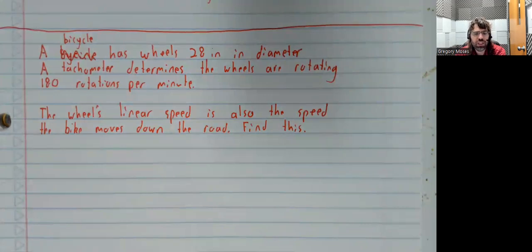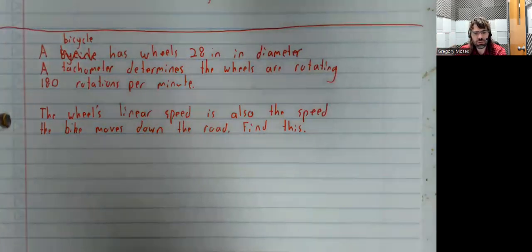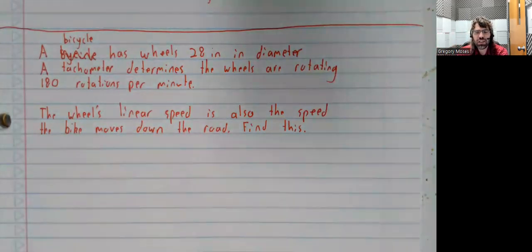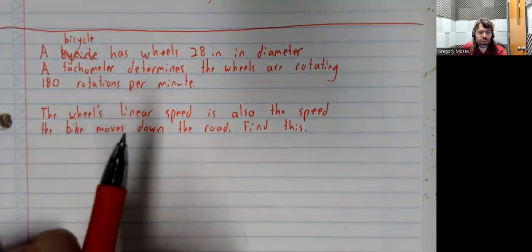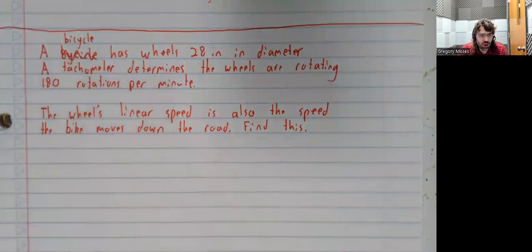Now, the wheel's linear speed on a bicycle is also the speed that the bike moves down the road. So let's find that linear speed. Let's find how quickly the bicycle is moving. And there are a few different ways to do this problem.